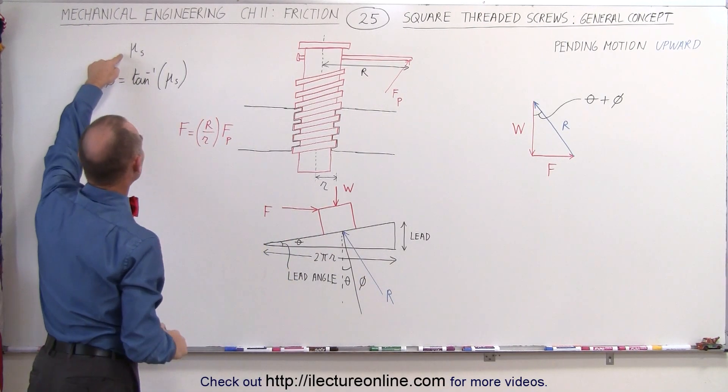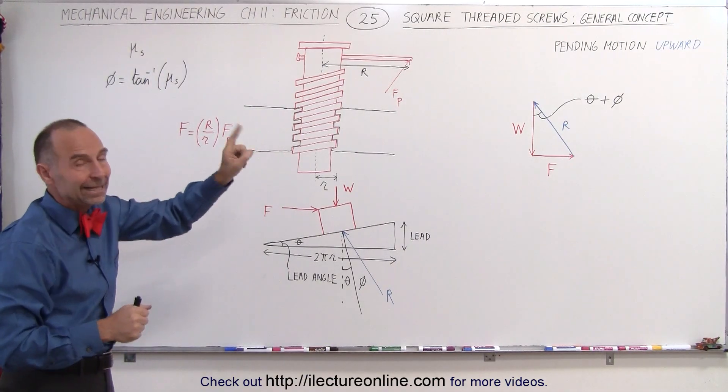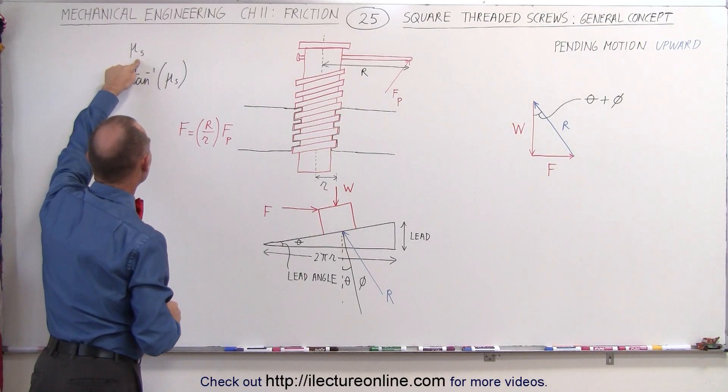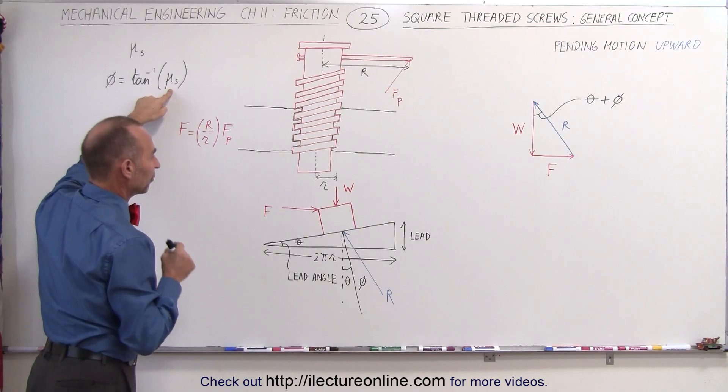And again, if you know the coefficient of friction, and in this case, since nothing is moving, we're talking about pending motion upward, we take the static coefficient of friction and the angle phi is equal to the arctangent of the static coefficient of friction.